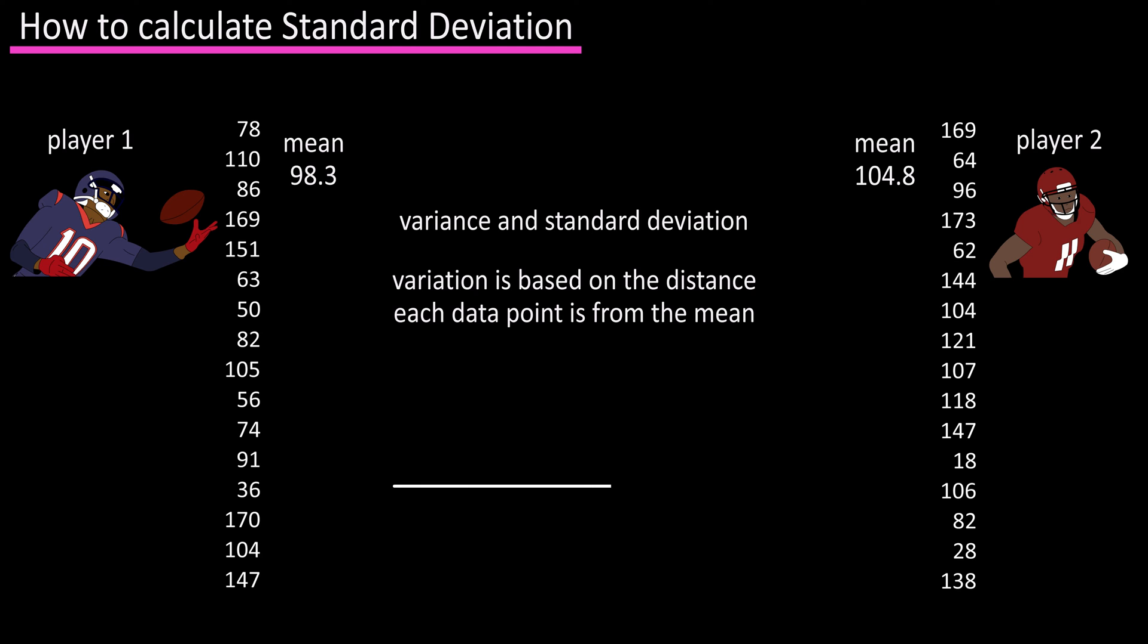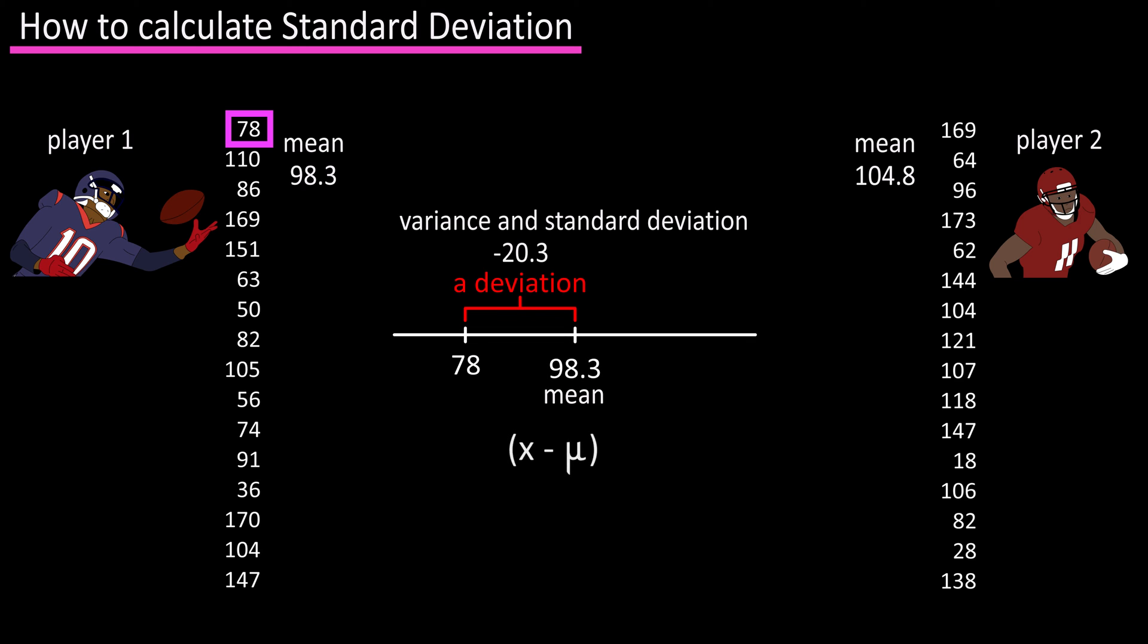So for receiver one we can draw a line and in the middle mark 98.3, the mean for his yards per game. We can then mark 78, the first value in his data set. So this distance negative 20.3 is called a deviation. We can write this as x minus mu, where x is a data point in the data set and mu is the mean.